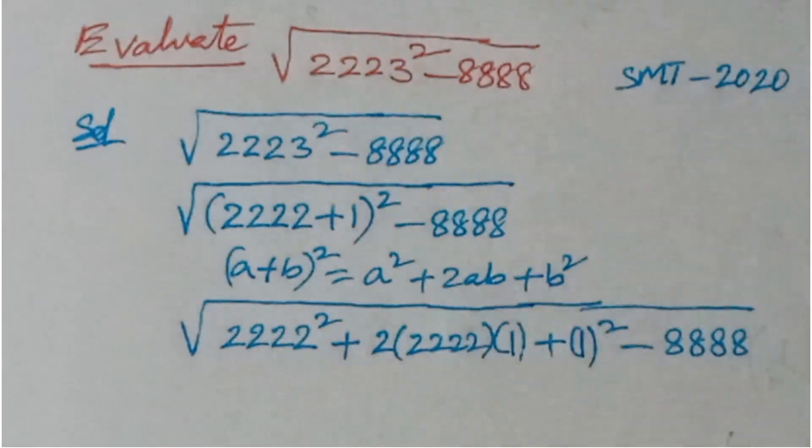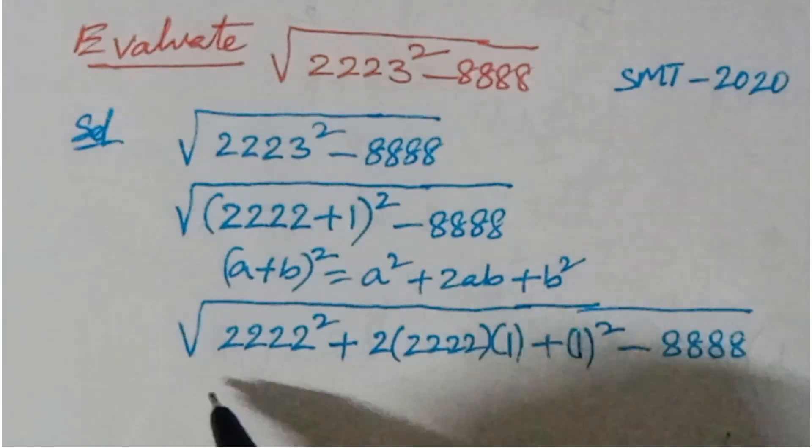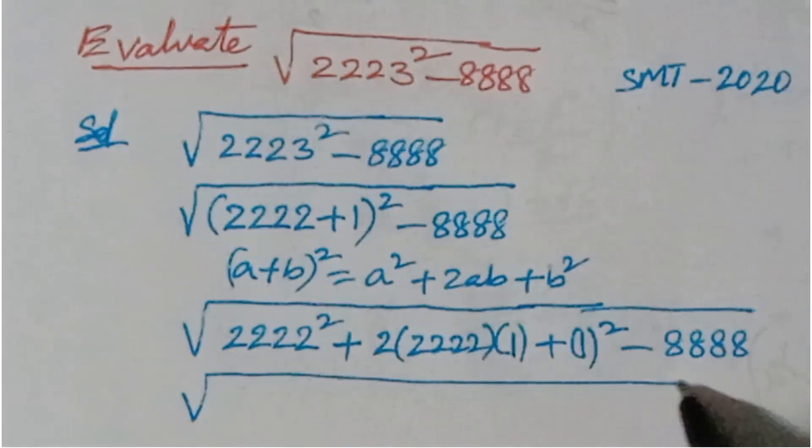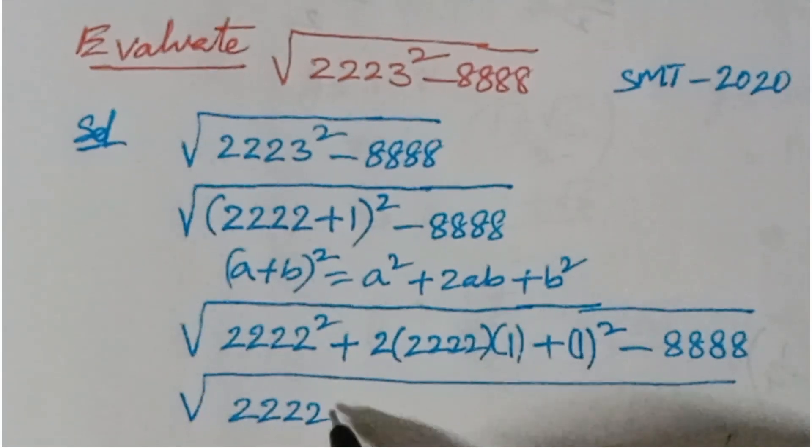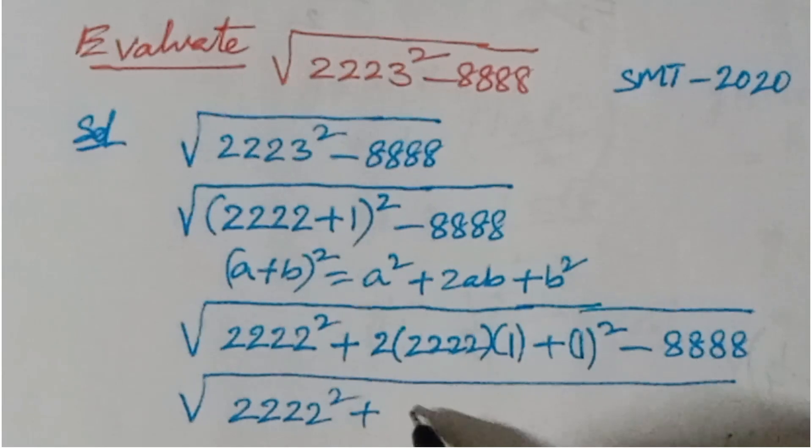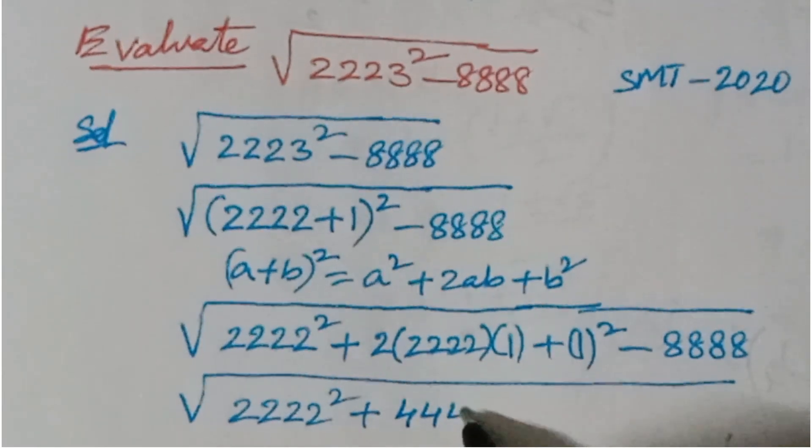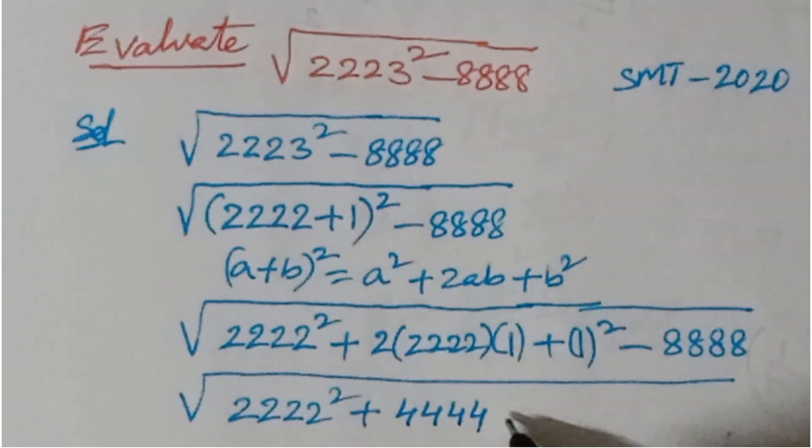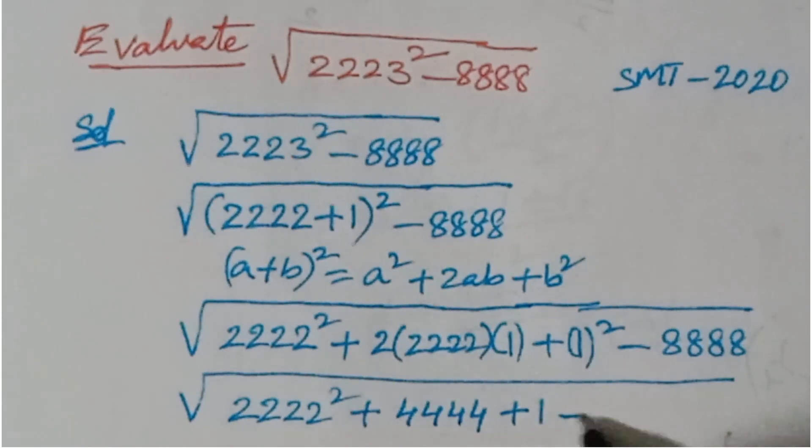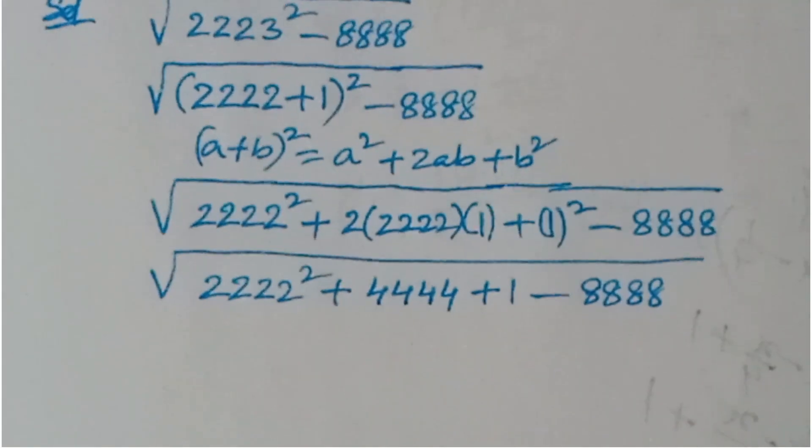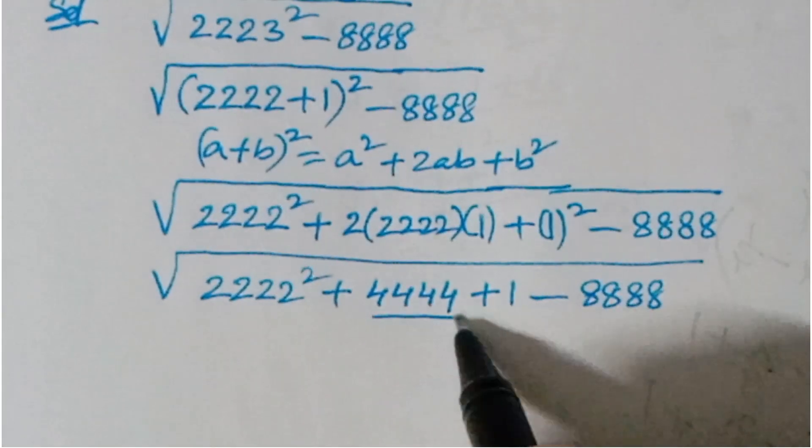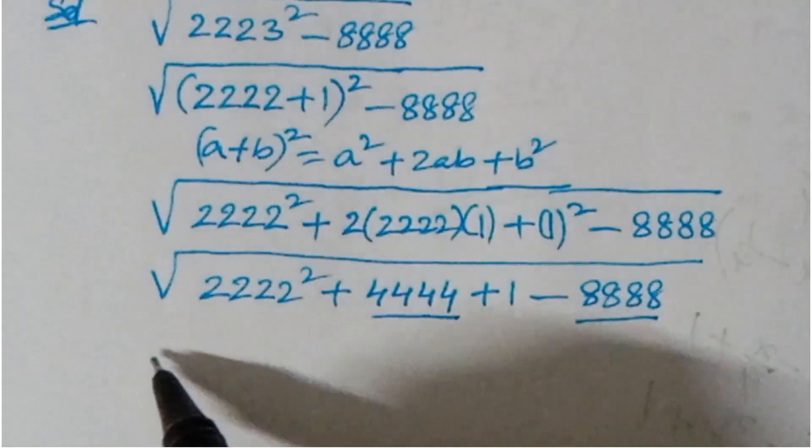So if you write this here, you'll get square root of 2222 squared plus 4444 plus 1 minus 8888.